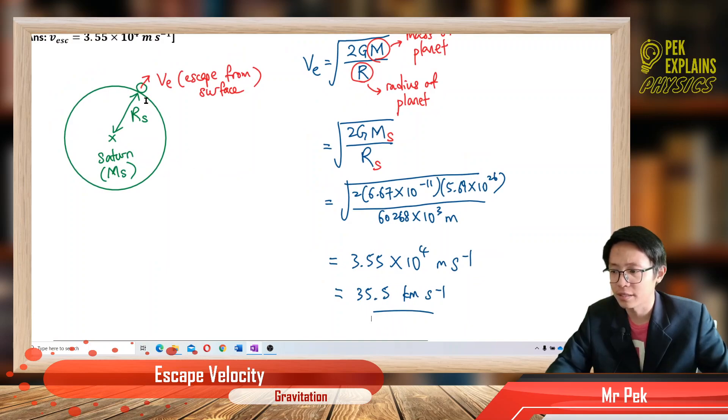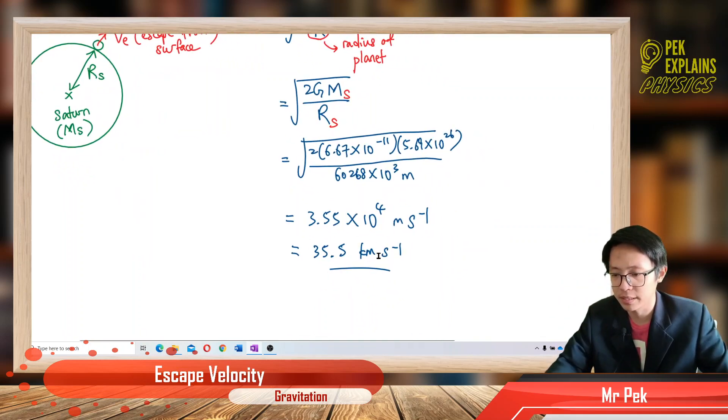Because we all know that Saturn is a very big planet. So, if you want to escape the planet Saturn, you need to achieve this velocity in one second to travel 35.5 kilometer. Unbelievable. Alright. Thank you. Stay tuned for the upcoming videos. Bye.